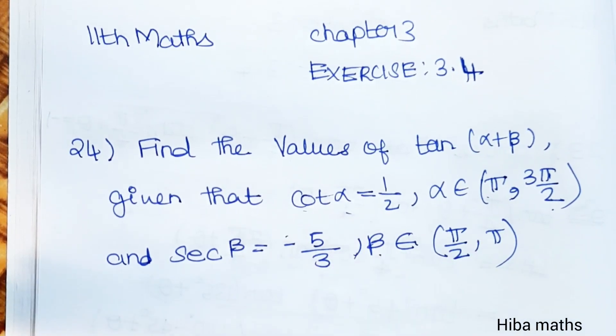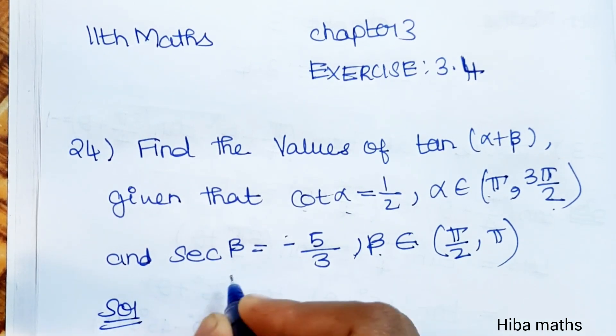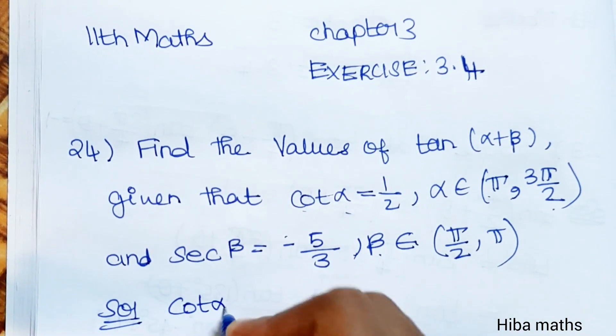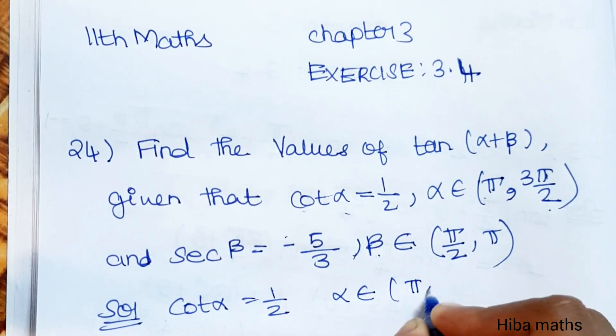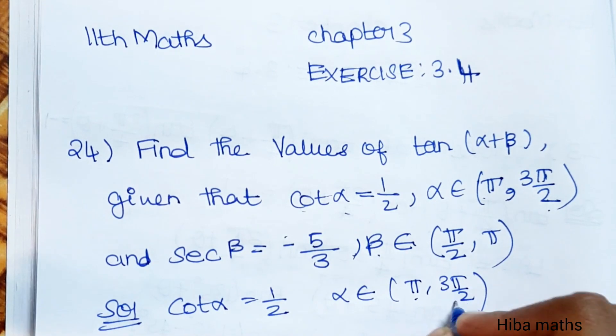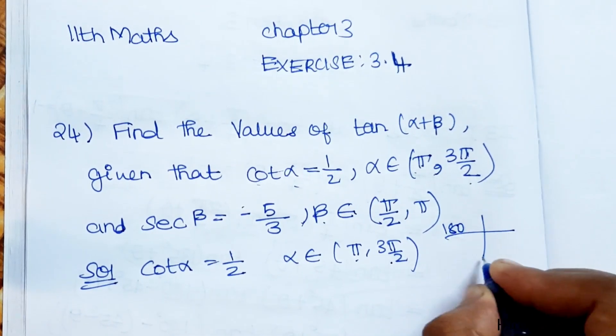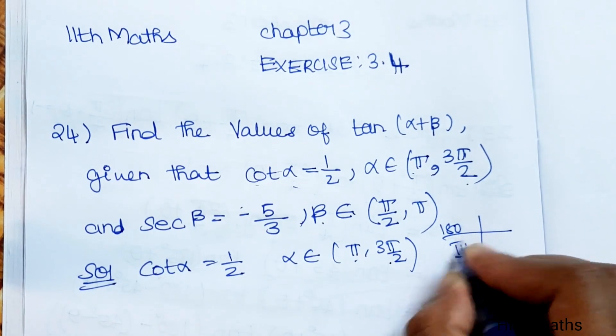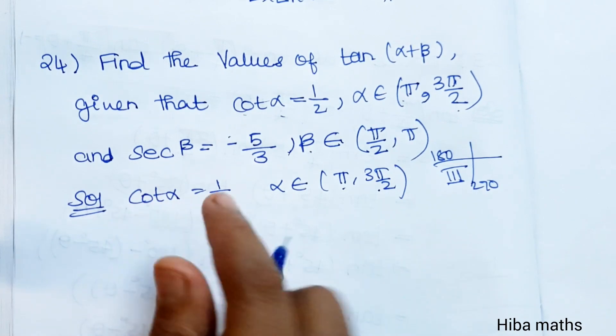The conditions are tan(α+β). α belongs to (π, 3π/2), which is 180 to 270 degrees, the third quadrant. In the third quadrant, tan has a positive value, so that means positive value.